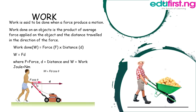Work is said to be done when a force produces motion. Work done on an object is the product of the average force applied on the object and the distance traveled in the direction of the force. Mathematically, work done equals force times distance. The SI unit of work is the Joule.